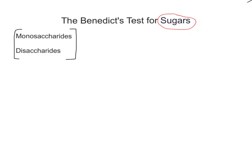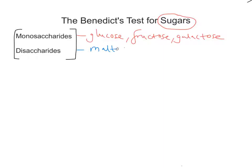So monosaccharides include glucose, fructose, and galactose. Disaccharides, however, are when you have two monosaccharides joined together with a glycosidic bond between them — I'll talk about bonding in another video. Disaccharides include things like maltose, lactose, and sucrose.